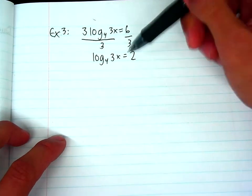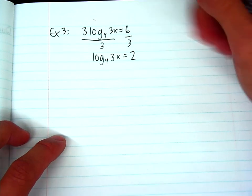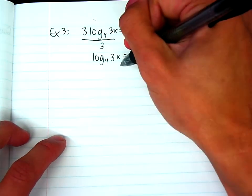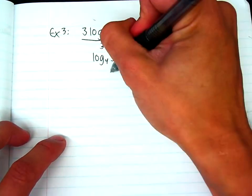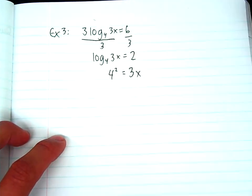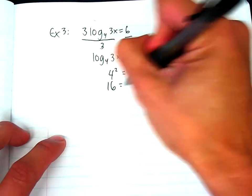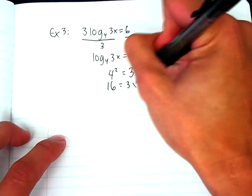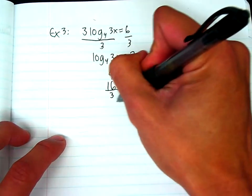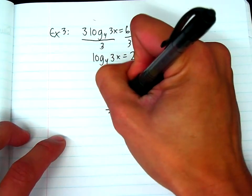So I'll get log base 4 of 3x equals 2. And then at this point, this is in log form, and it doesn't look like I can do anything. So let's try switching it to exponential form. So if I switch it to exponential form, it will be 4 squared equals 3x. And it looks like I can solve for x a lot easier. So it would be 16 equals 3x. I divide by 3. So now x would equal 16 over 3.